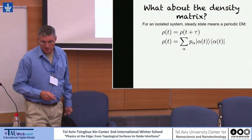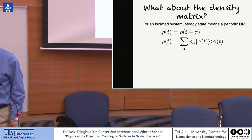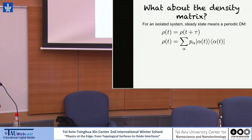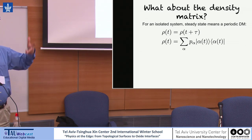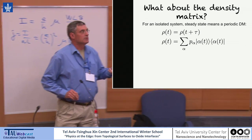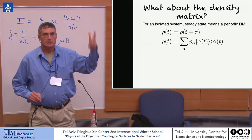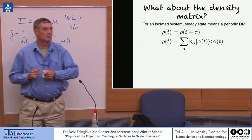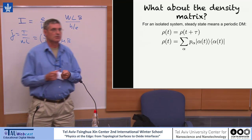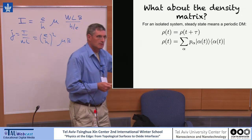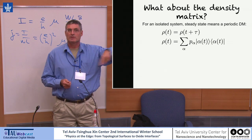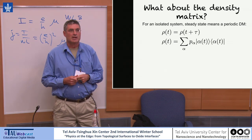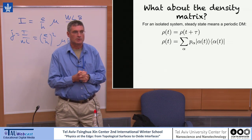An important question that arises, and was treated in different approaches, is what do you do about the density matrix? There's a Floquet Hamiltonian that is a bunch of frequencies. A density matrix — if you want to write a Boltzmann weight — you would need to have an ordering relation on the eigenvalues, such that high energies have less probability than low energies. But if they're all sitting on a circle with no ordering, you have to find a way to order them.